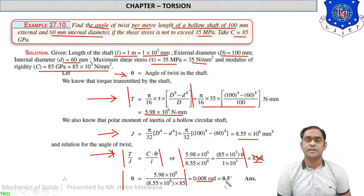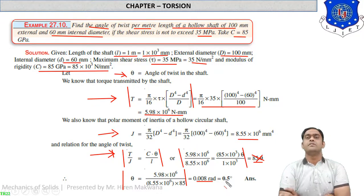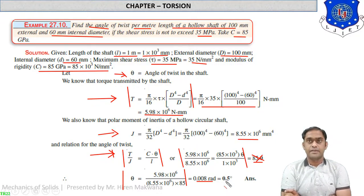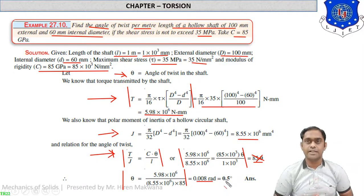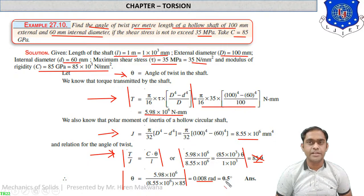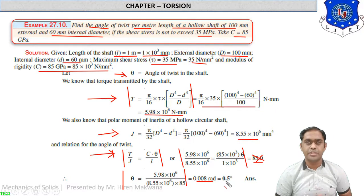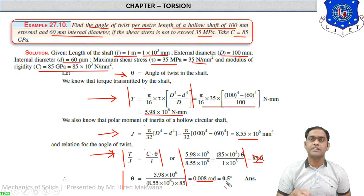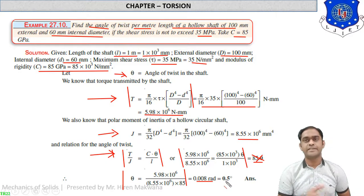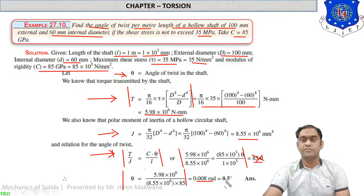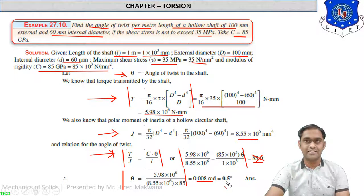These numericals cover all the varieties that will appear in your exam, so just revise them. The chapter ends here. In the next lecture we will start a new chapter. Practice both lectures: one on the theories of torsion and one on the numericals of torsion. We will meet in the next lecture. Thank you.